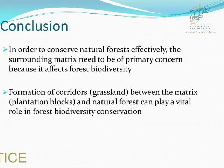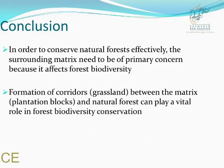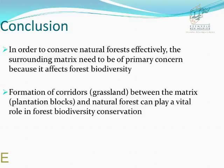To conclude, in order to conserve natural forests effectively, the surrounding matrix needs to be incorporated within the conservation plan because it does affect natural forest biodiversity. Formation of corridors between the matrix and the natural forest can play a vital role in forest biodiversity conservation. Lastly, different arthropod groups respond differently to disturbances. Thank you.